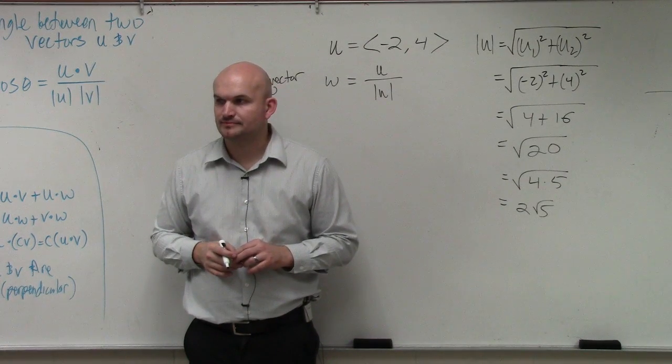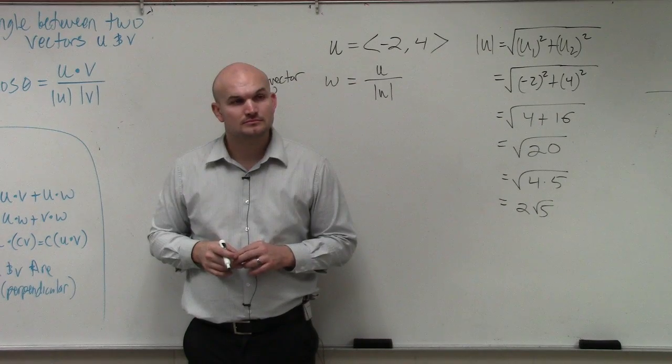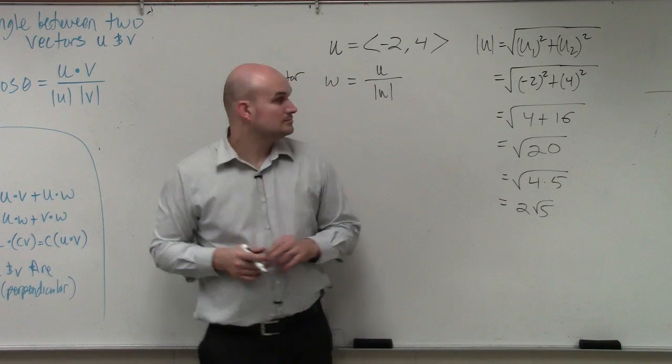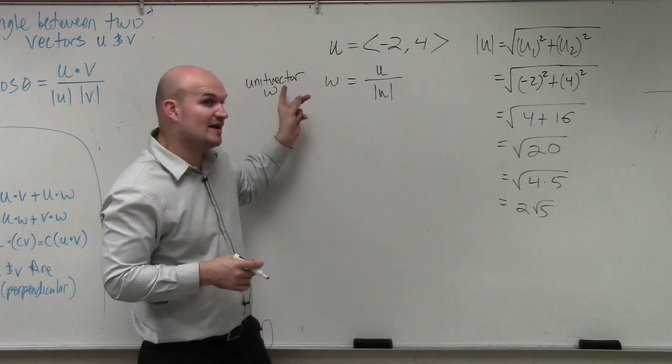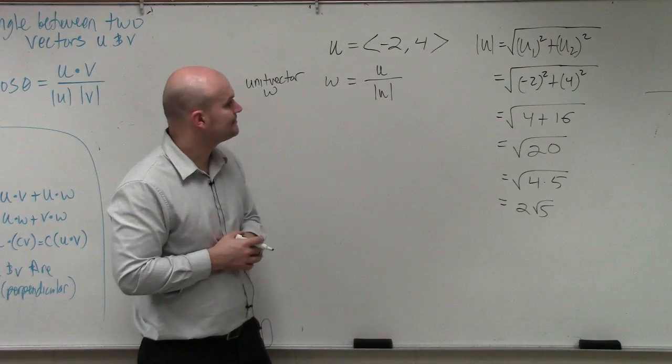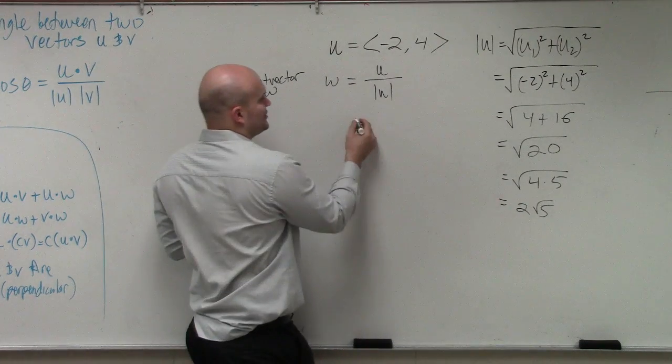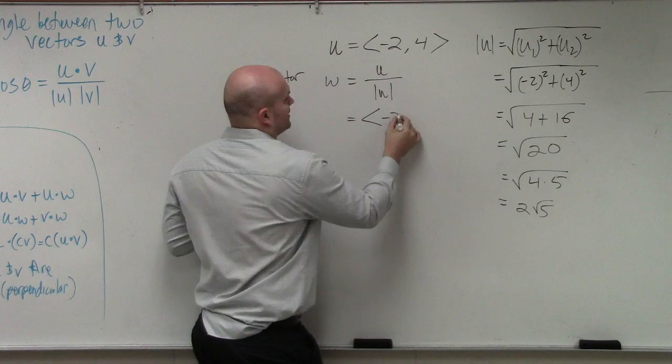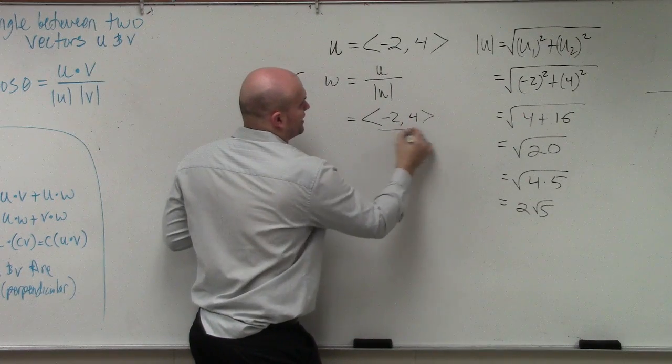Yeah. W. Does that make sense? So w is u over the magnitude of u? Yeah, where w represents the unit vector. Right. OK? So we take our vector u, negative 2 comma 4, and we write it over our magnitude.